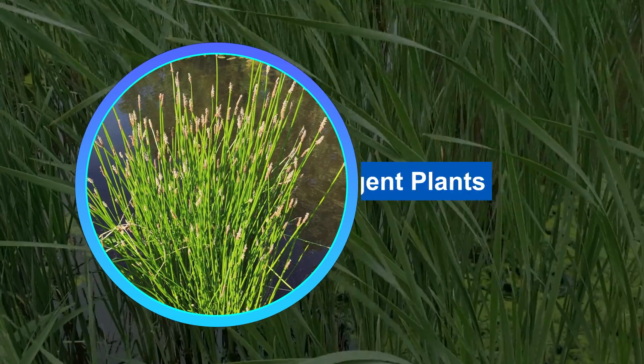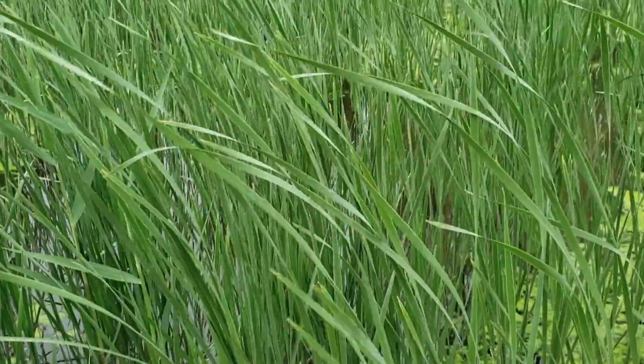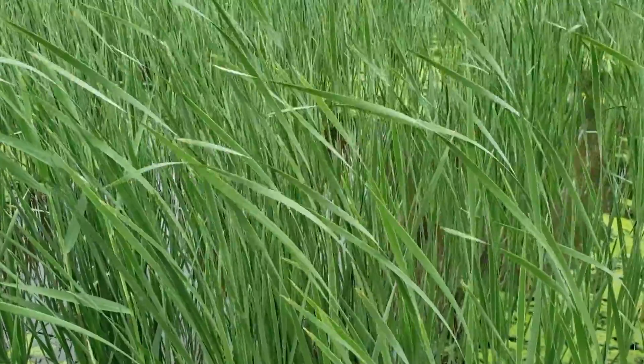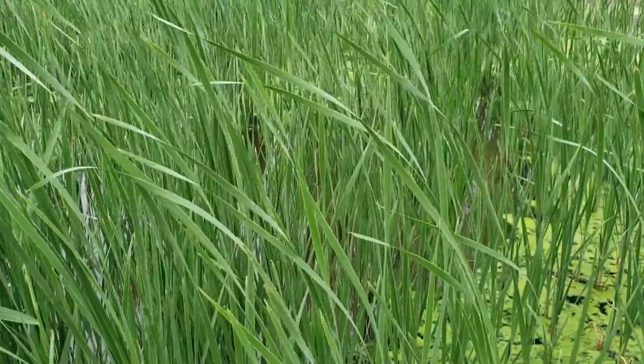The first group is emergent plants. These have their significant portion of the body outside water and grow near the edges of the wetland. These vascular plants often have deep and dense roots that stabilize shallow soils. Examples: reeds and sedges.